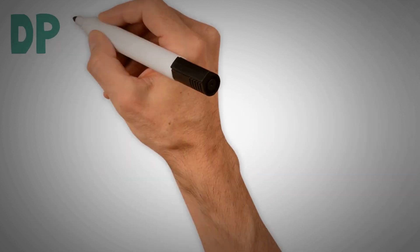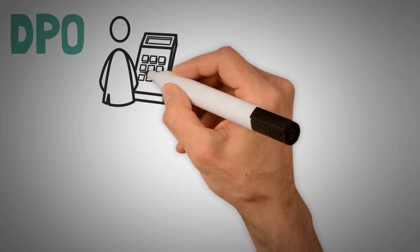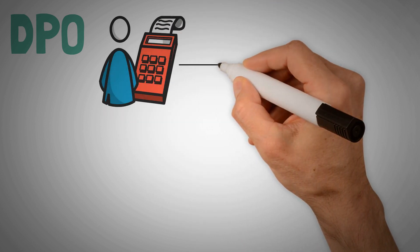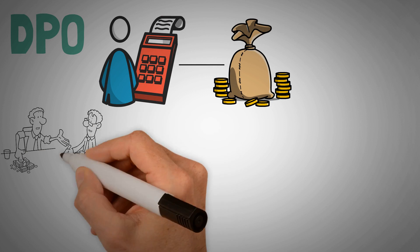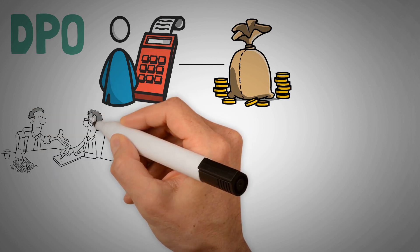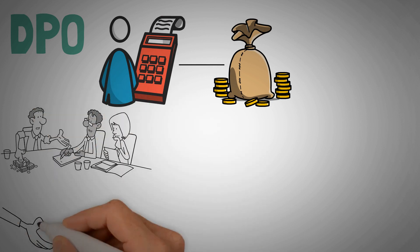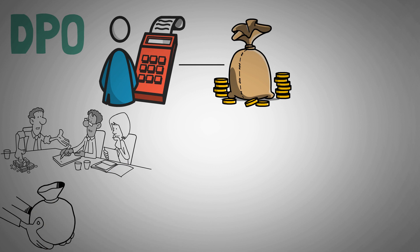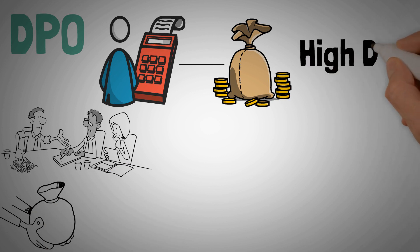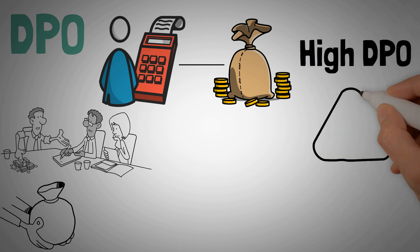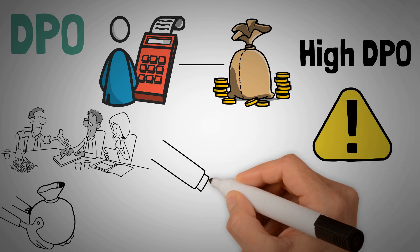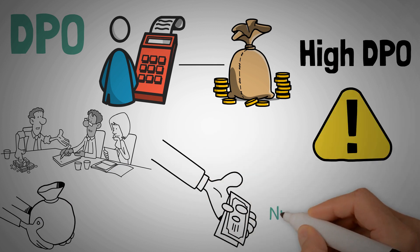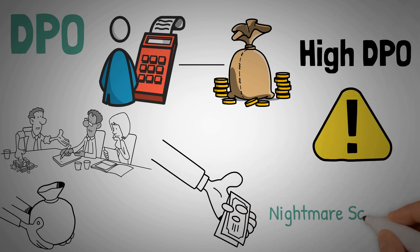High DPO. A high DPO means that a company is delaying payments successfully, allowing more money in working capital. If a company can make inventory and sell it before paying for the materials and shipping, it is in a dream situation — that is, as long as the high DPO is not the result of liquidity issues. If a company is delaying payments because it hasn't got the money to pay its creditors, then that is a nightmare scenario.